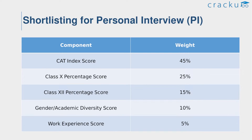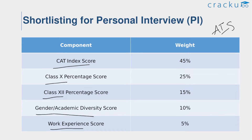In Stage 2, a shortlist of candidates in each reservation category is prepared based on the Aggregate Index Score (AIS). The AIS is computed based on performance in CAT, academic performance in Class 10 and Class 12, work experience, and gender diversity. The CAT index score carries a weight of 45%, with equal weightages across the three sections. Class 10 percentage carries 25%, Class 12 percentage carries 15%, gender diversity carries 10%, and work experience carries 5%.